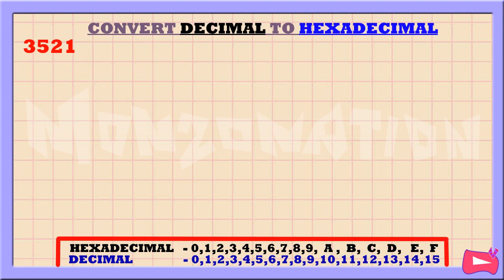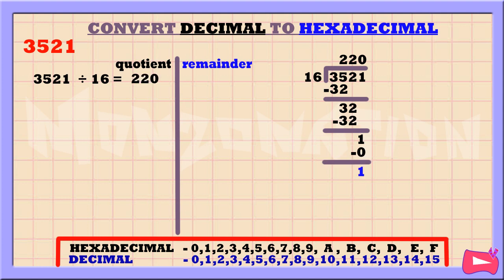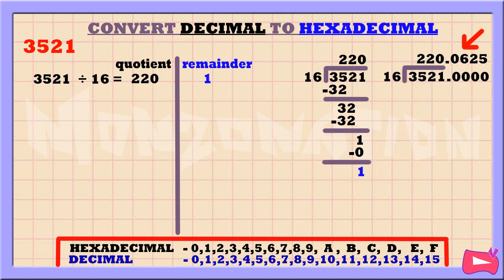Let's convert the decimal number 3521 to hexadecimal. The first step is to divide 3521 by 16. Without a calculator, 3521 divided by 16 is 220, remainder 1. If you are using a calculator, the result is 220.0625. In that case, you'll have to multiply 0.0625 by 16. We have 4 numbers to the right of the decimal point, so we move the decimal point 4 places to the left.